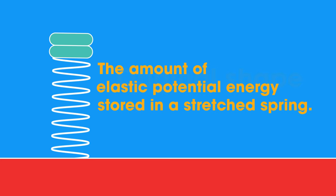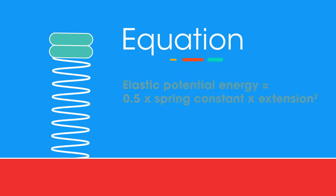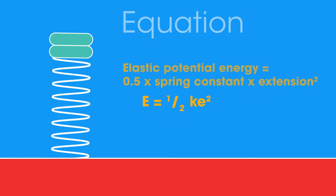The amount of elastic potential energy stored in a stretched spring can be calculated using this equation. Elastic potential energy equals 0.5 times spring constant times extension squared, assuming the spring obeys Hooke's law, where elastic potential energy E is measured in joules, spring constant k in newtons per metre, and extension E in metres.